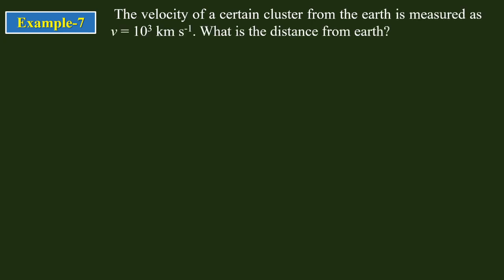The velocity of a certain cluster from the Earth is measured as P equal to 10 to the power 3 kilometers per second. What is the distance from the Earth? The Hubble constant H₀ is 72 kilometers per second per megaparsec.